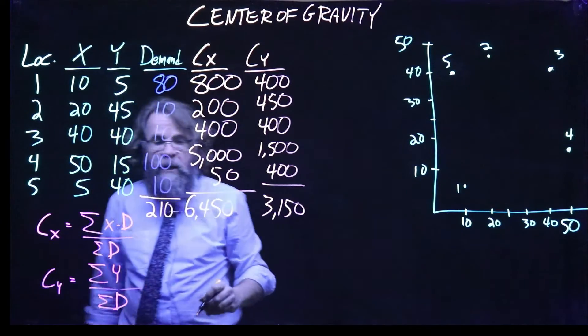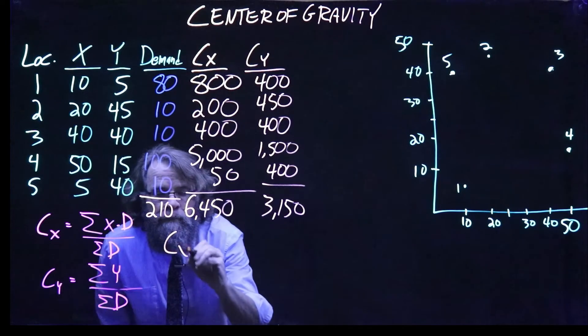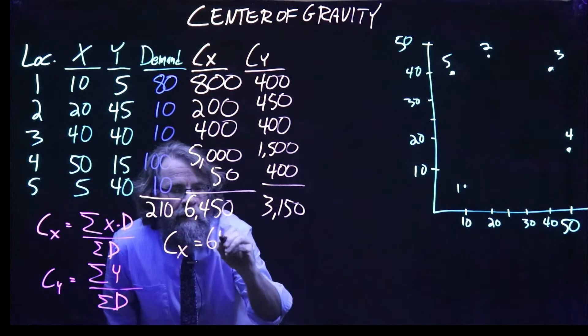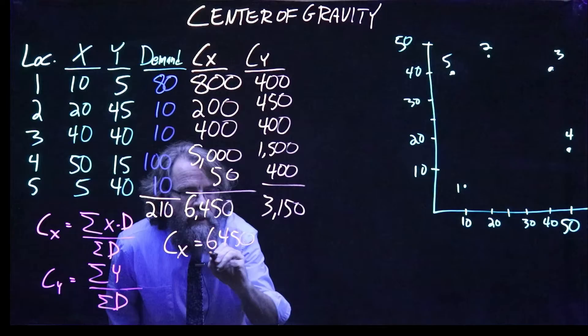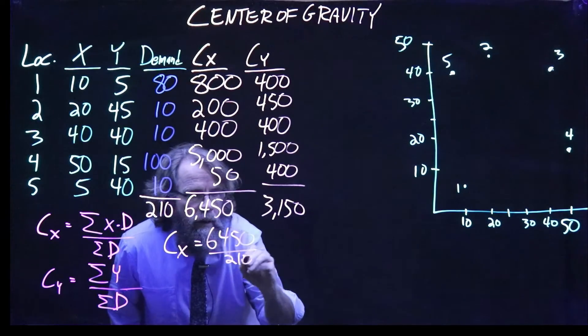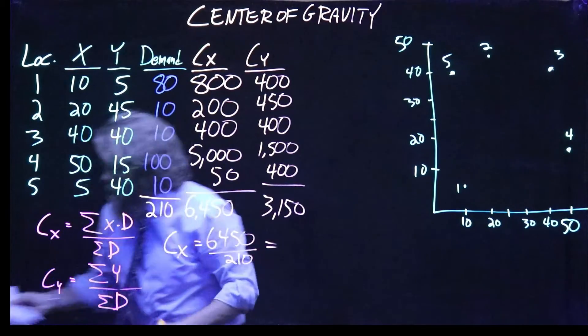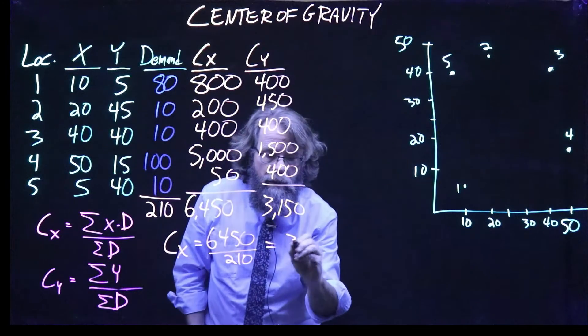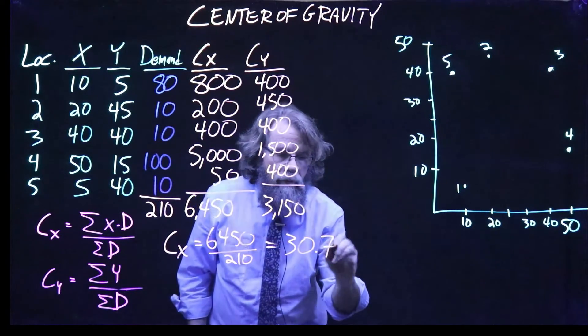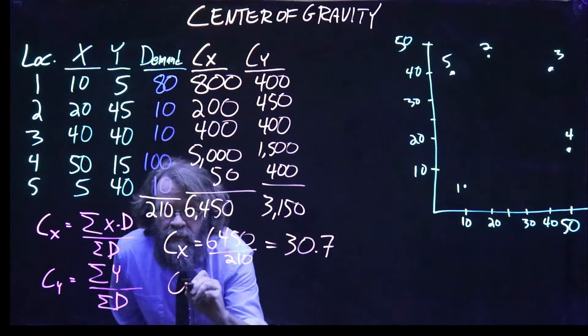Right? Beautiful. Okay, so to get our X coordinate, we take 6450, divide that by 210, and we get 30.7. Same thing for the Y coordinate.